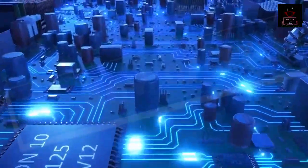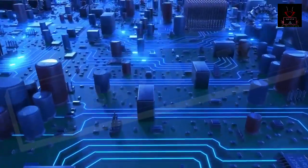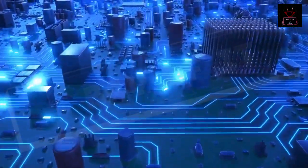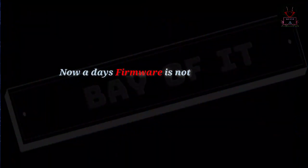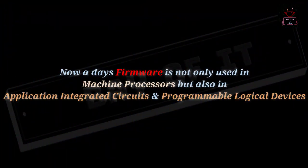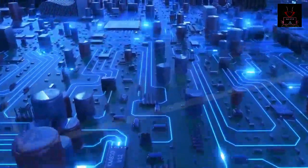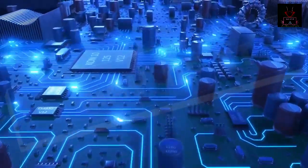In early days, changing of firmware was rarely done in its lifetime, but nowadays it is a common procedure of changing or upgrading the firmware. In today's time, firmware is not only used in machine processors, but also in application integrated circuits and programmable logical devices. There are many examples of firmware, but the best and well known is computer BIOS.